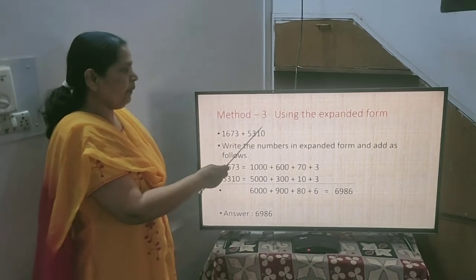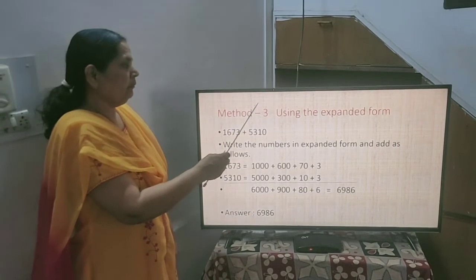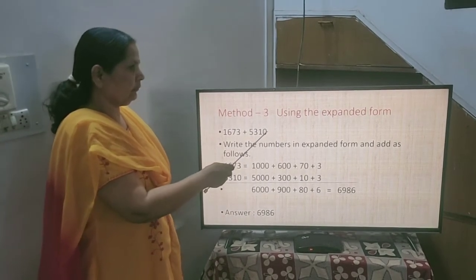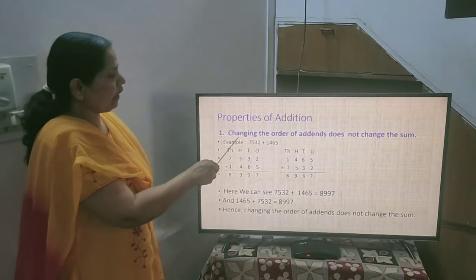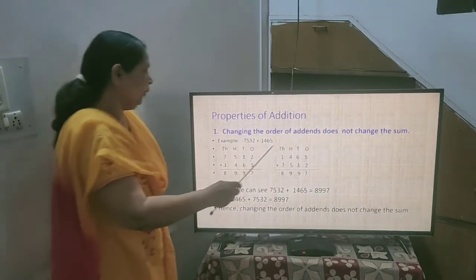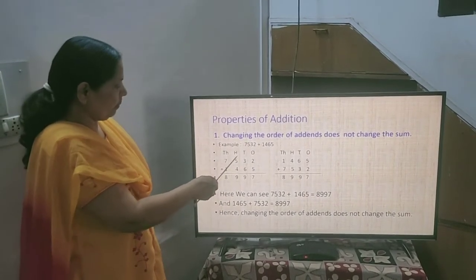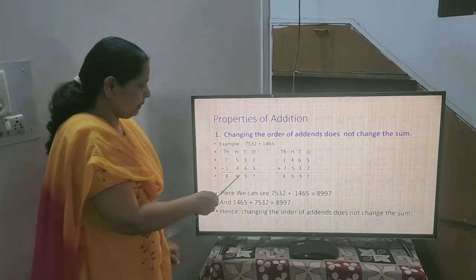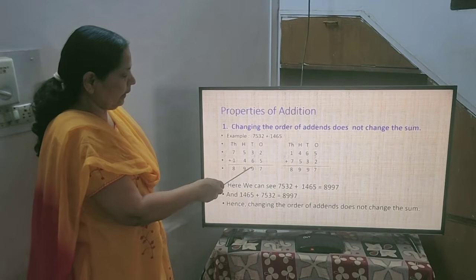Now we will see the next topic in your book is properties of addition. Here changing the order of addends does not change the sum. Here 2 numbers are given and we have written 1st number in 1st place, 2nd number in 2nd place. Now the total comes to 8,997.